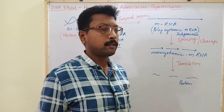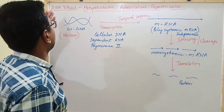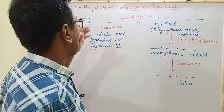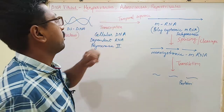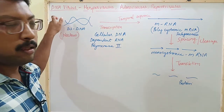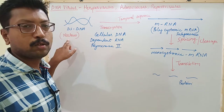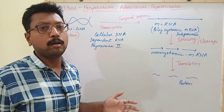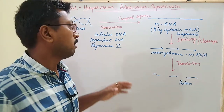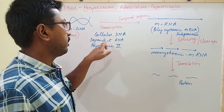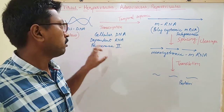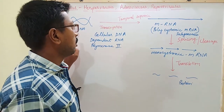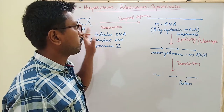The next topic is replication in herpes viruses, adenoviruses, and papova viruses. In the case of these viruses, they have a double-stranded DNA and the replication takes place in the host nucleus. They don't require their own DNA-dependent RNA polymerase — they use the cellular DNA-dependent RNA polymerase, which comes from the host cell, not from the virion.